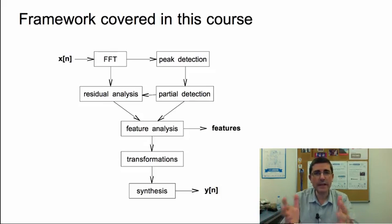And the kinds of things we have been doing can be captured with this diagram. We start from the input signal x of n. The analysis begins with the fast Fourier transform, the FFT, then obtain the peaks from the spectrum. Out of that we can obtain the partials, the harmonics of a sound. And these can be subtracted from the original signal to obtain the residual.